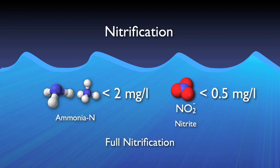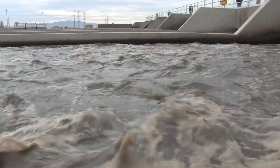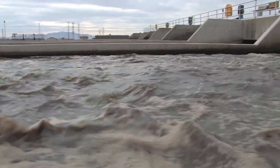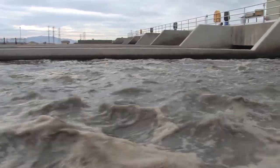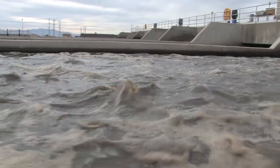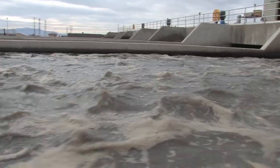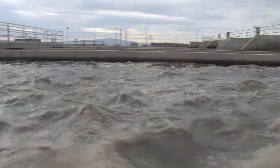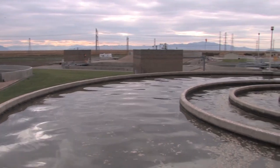Typically, full nitrification is observed when ammonia concentrations are reduced to less than 2 milligrams per liter and nitrite concentrations to less than half a milligram per liter. Nitrification is a very oxygen-hungry process. As a comparison, to remove 1 pound of BOD, 1.2 pounds of oxygen are required. However, to reduce 1 pound of ammonia to nitrate, 4.6 pounds of oxygen are required.